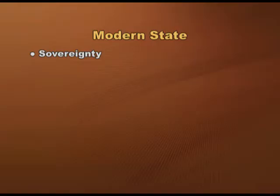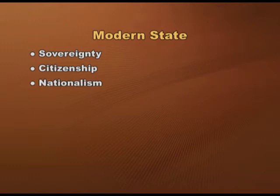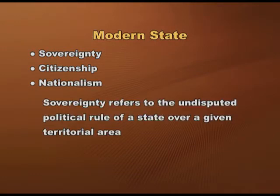The modern state is defined by its sovereignty, citizenship, and nationalism. Sovereignty refers to the undisputed political rule of a state over a given territorial area. Initially in sovereign states, citizens did not have rights for political participation. There was a long struggle which limited the power of monarchs and overthrew them — the biggest examples being the French Revolution and the Indian freedom struggle.